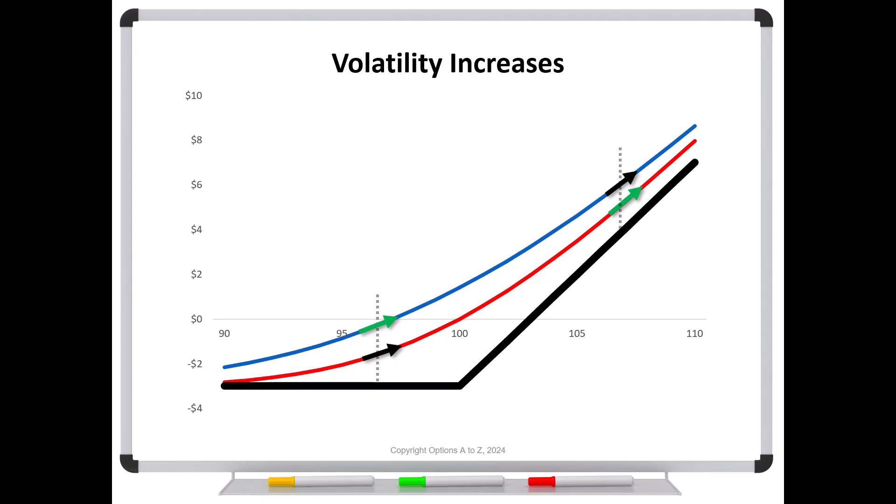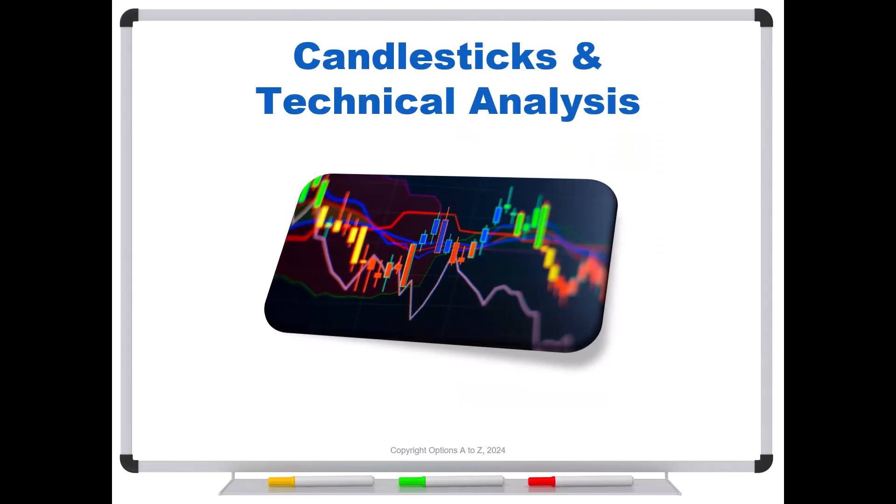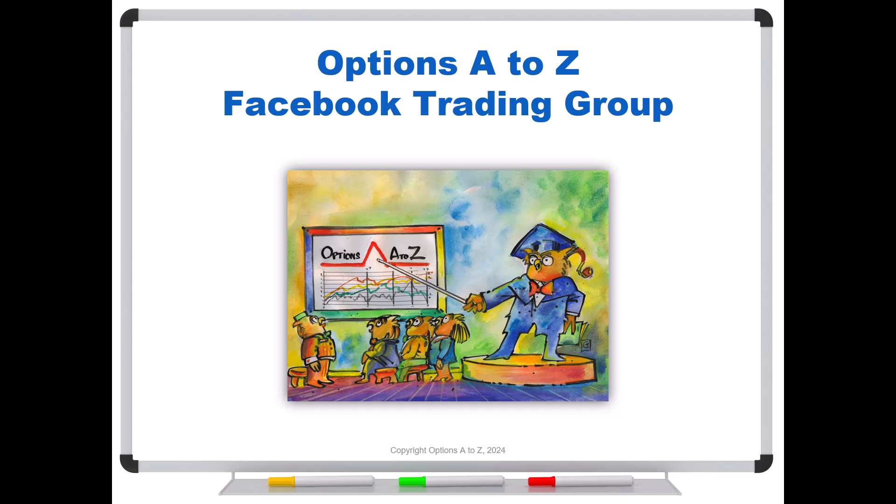I hope that helps you to have a quick survey of why options have different deltas over different stock prices, whereas stock doesn't, and how those deltas change as the stock price changes, as time changes, and as volatility changes. There's a lot of different combinations you would have to memorize. But if you just understand what's going on with these curves, it's very easy to picture. And when you can come up with simpler explanations, you're going to make faster and better decisions, and that's going to mean better results. For anyone who'd like to learn more about the arts and science of options trading, please check out the Alpha Trader course, Strategy Lab, and a candlesticks and technical analysis course. It's all at optionsAtoZ.com. Also, please join us on Options A to Z's Facebook trading group, and you can find a link in the description below.